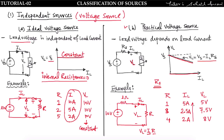So here you can see that with increase in load current the load voltage is decreasing. When IL increases from 2 ampere to 5 ampere, VL decreases from 8 volt to 5 volt. In the graph, the load voltage has a negative slope with respect to load current. So in a practical voltage source, load voltage depends on load current, while in an ideal voltage source, load voltage is independent of load current.